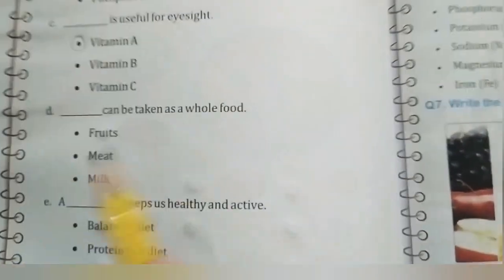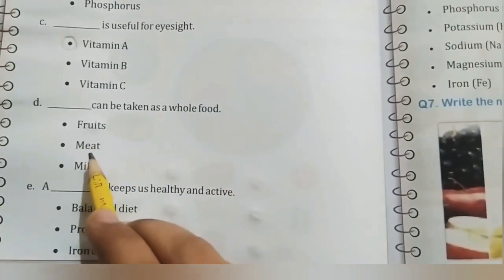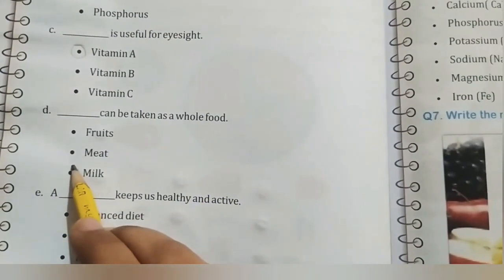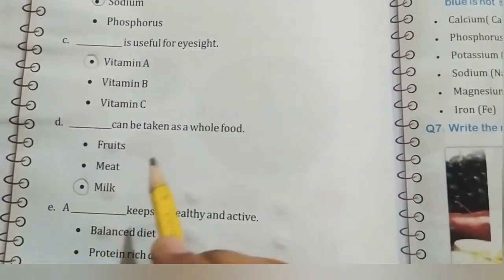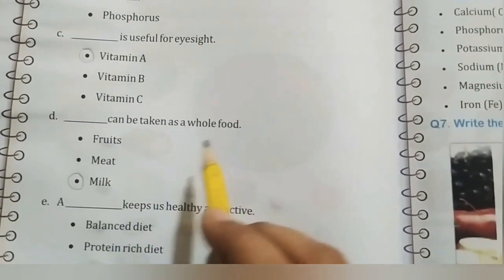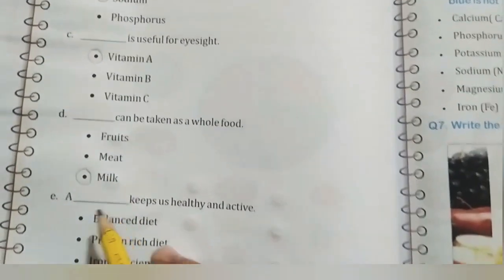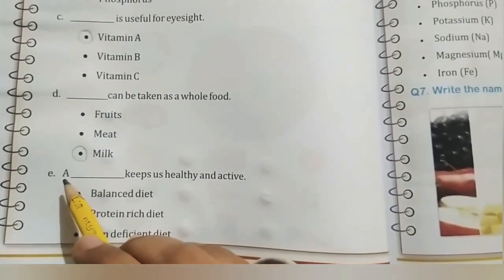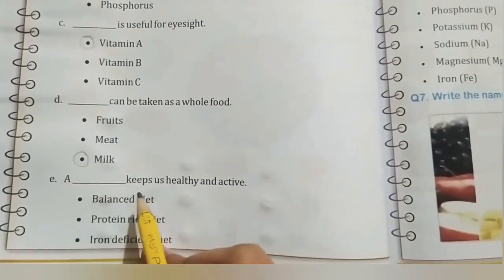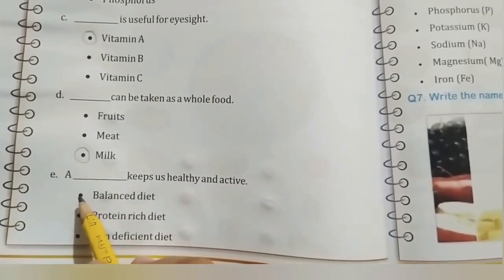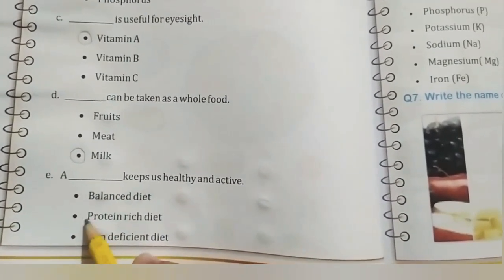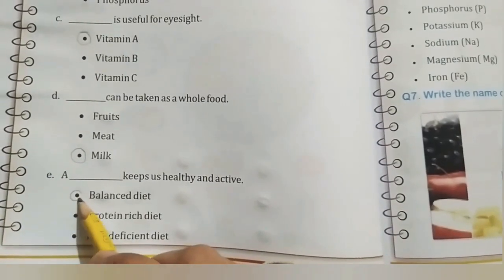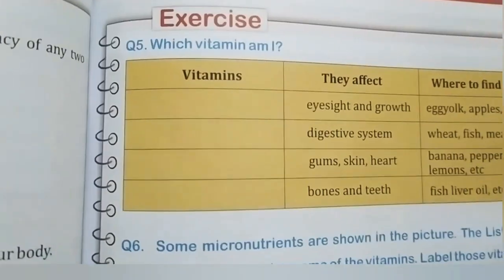Part D: dash can be taken as a whole food — fruits, meat, or milk. I told you that milk contains many food groups, so milk can be taken as a whole food. The correct answer is milk. Part E: a dash keeps us healthy and active. The options are balanced diet, protein-rich diet, or iron-deficient diet. The correct answer is balanced diet.